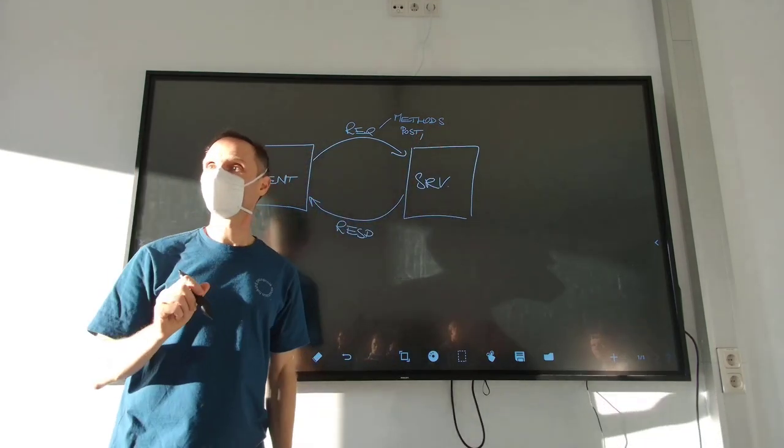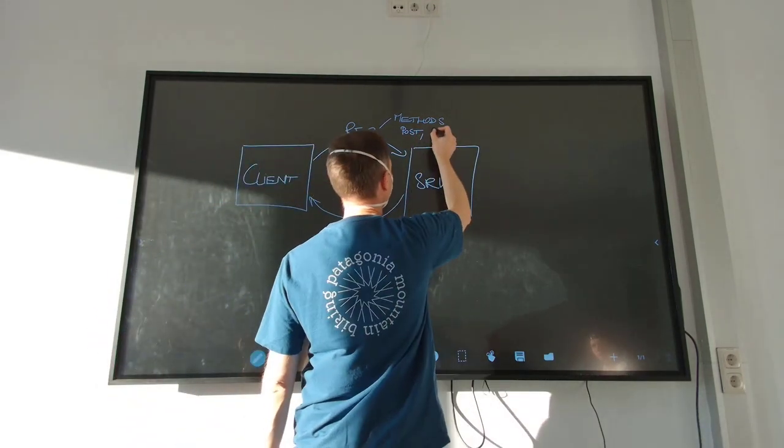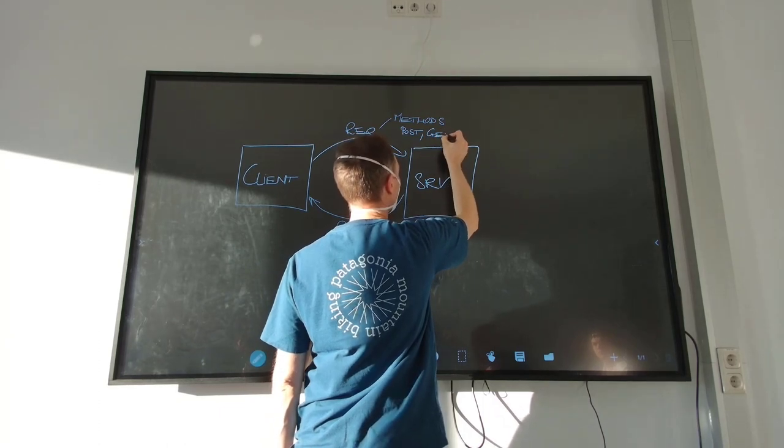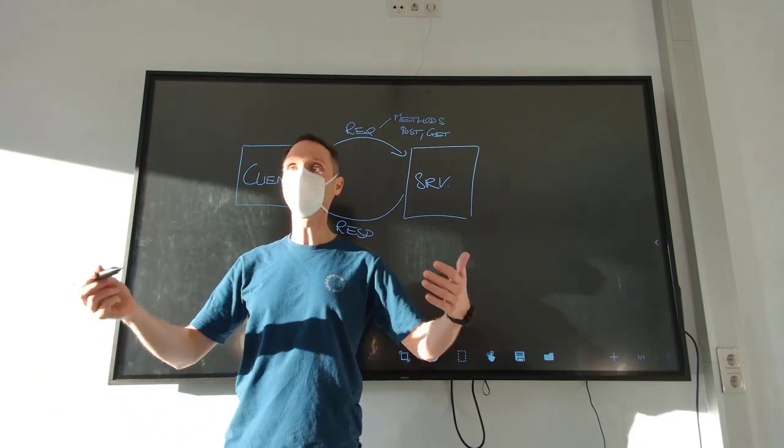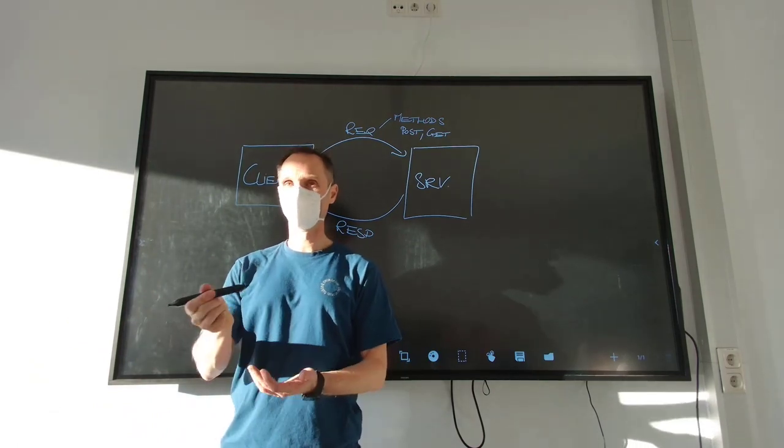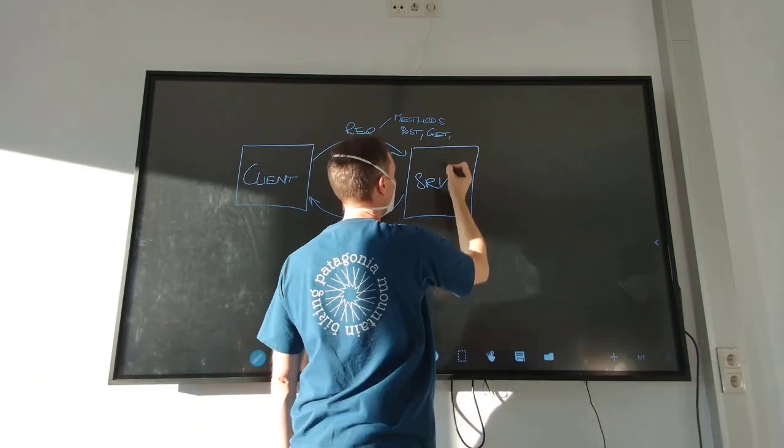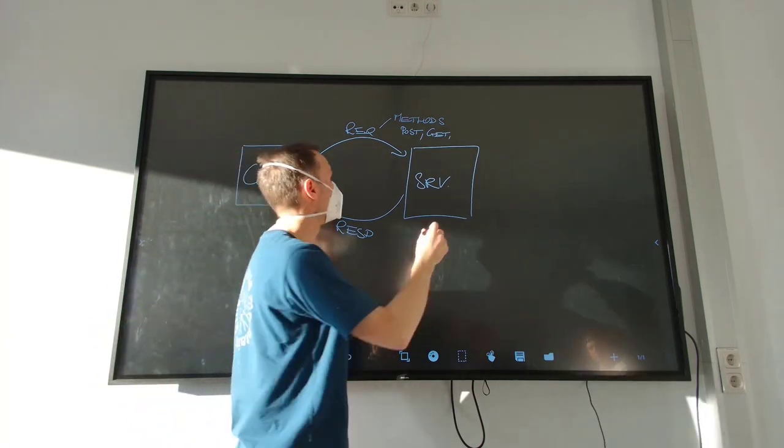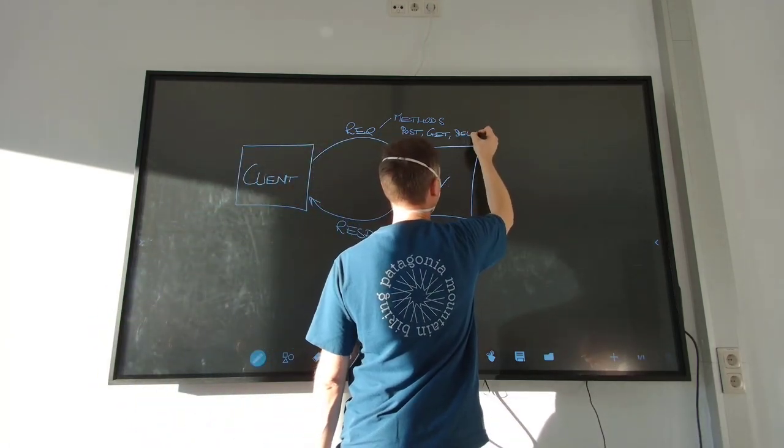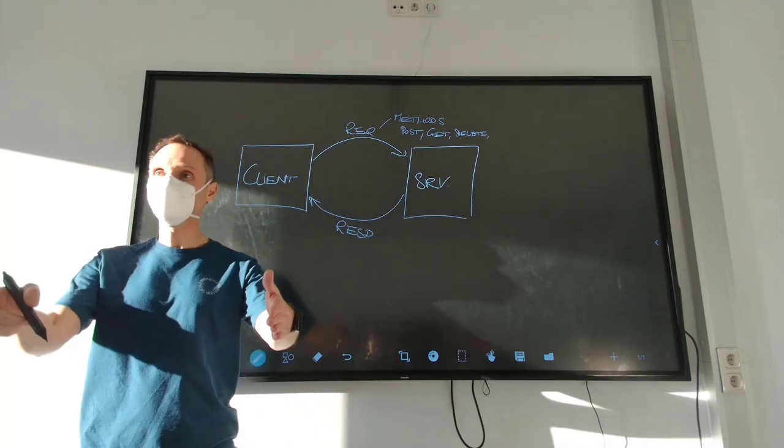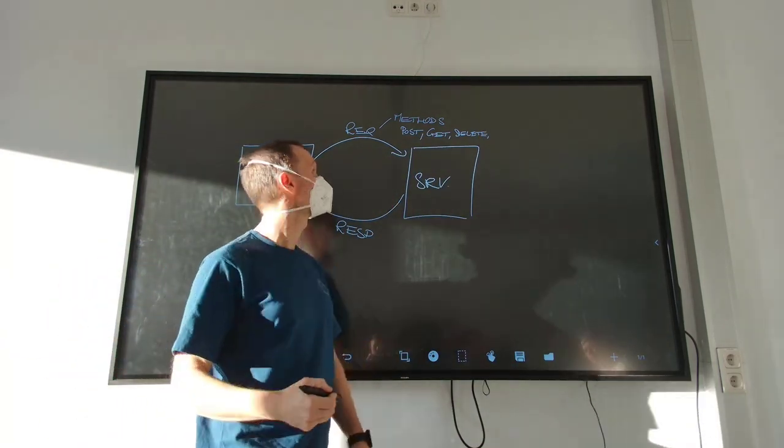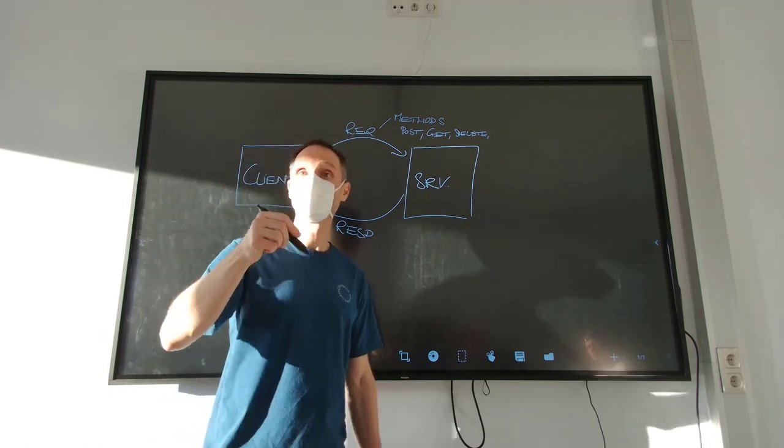So that is the post method. What else? You mentioned multiple methods. Get. Get is kind of obvious, right? The client asks the server, give me some data I would like to read data from. What else? Delete. Do I need to describe what delete does? Not really. The client says delete something from a database, for instance.